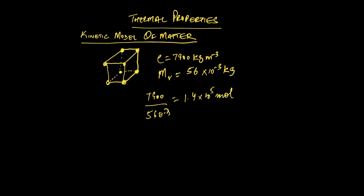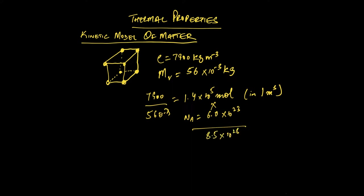So this is how many moles you have in one cubic meter of iron — a solid block of iron. You also know Avogadro's number, which is 6.02 times 10 to the 23 atoms per mole. If you multiply these two together, you basically arrive at 8.5 times 10 to the 28 atoms in a cubic meter of iron.